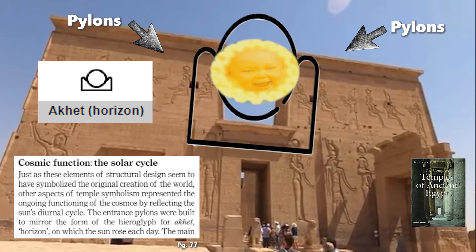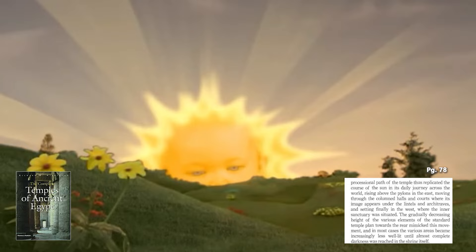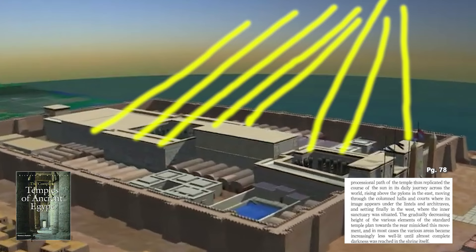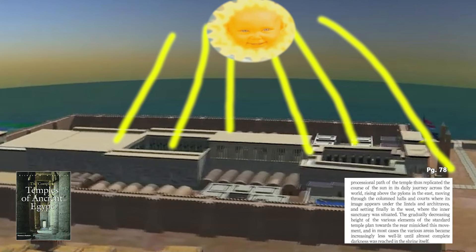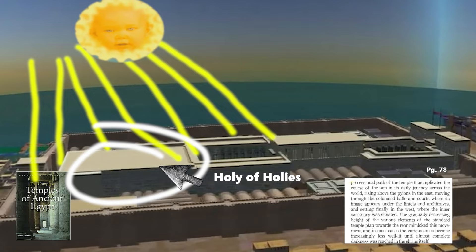The entrance pylons were built to mirror the form of the hieroglyph Akhet — in other words, horizon — on which the sun rose each day. So we see a reference to the past, but also parts of the temple representing what would happen every day. The main processional path of the temple replicated the course of the sun in its daily journey across the world: rising above the pylons in the east, moving through the columned halls and courts where its image appears under the lintels and architraves, and setting finally in the west where the inner sanctuary was situated. The gradually decreasing height of the various elements mimicked this movement, and in most cases the various areas became increasingly less well lit until almost complete darkness was reached in the shrine — the Holy of Holies itself.